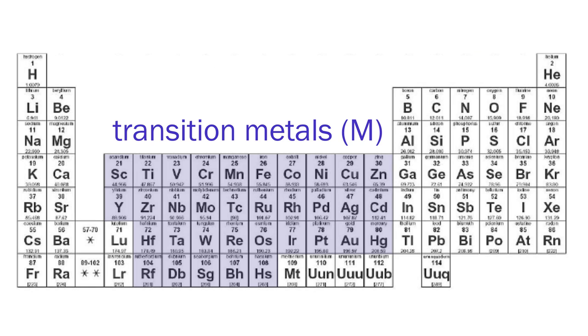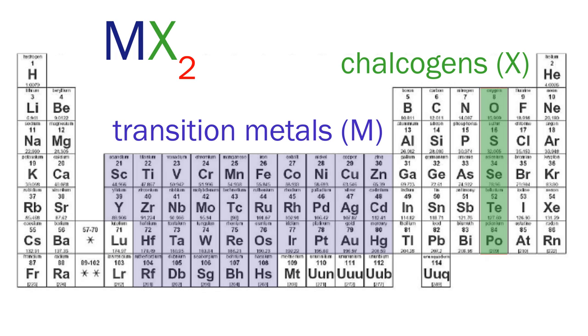The transition metal atoms form covalent chemical bonds with what are known as the chalcogen atoms, labeled X, located towards the right of the periodic table. For the compounds we're interested in here, each metal atom M bonds with two chalcogen atoms X, giving us the generic chemical formula for TMDs, MX2.